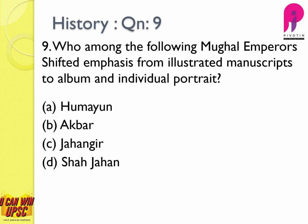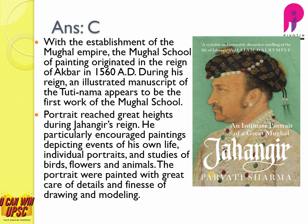Question number nine: who among the following Mughal emperors shifted emphasis from illustrated manuscripts to album and individual portraits? Every Mughal emperor had a unique cultural preference — Shah Jahan is called the engineering king and Jahangir is called the king of paintings. The answer is C — Jahangir. Portrait painting reached greater heights during Jahangir's reign; he encouraged paintings depicting events of his own life, individual portraits, and studies of birds, flowers, and animals.